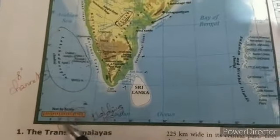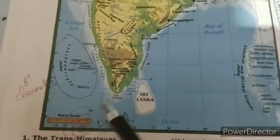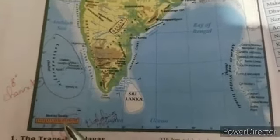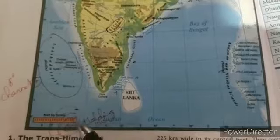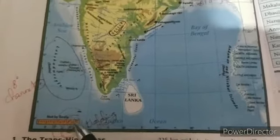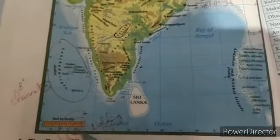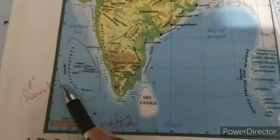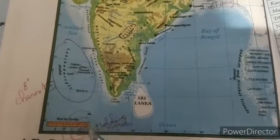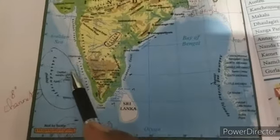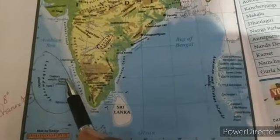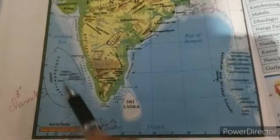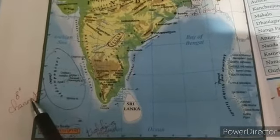If you look at the map, the nearby country is the Maldives Island. This island is a separate local country. Lakshadweep is separated from the Maldives by the 8-degree channel. We will find out about Lakshadweep's island and the 8-degree channel that separates them.